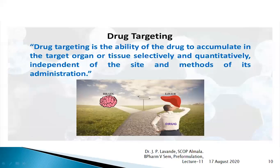Polymers also have applicability in drug targeting, which is a new area where we make the drug specifically go and act where it is required — targeting an organ, a system, a tissue, or a cell. Drug targeting has wide applicability and is mostly used in cancerous patients, where we want the drug effect only on cancerous cells and not on other host cells.